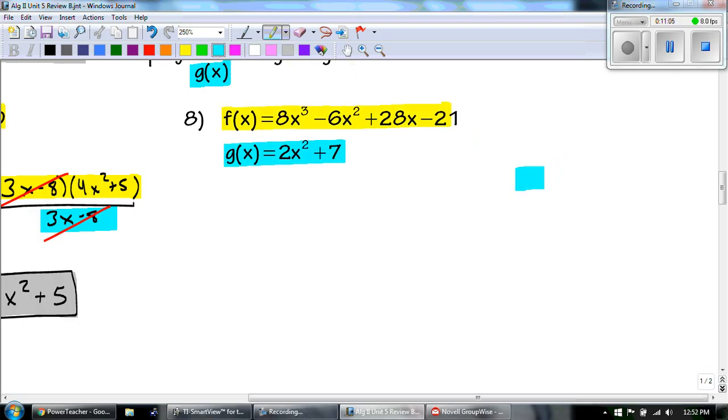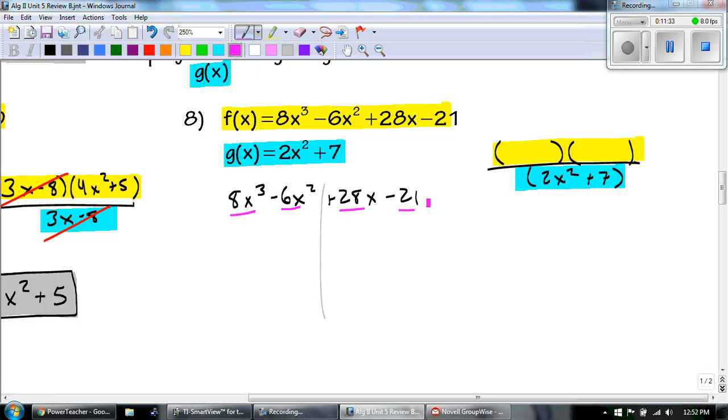And just like we wanted, we want to get these two to match. So we get 3x minus 8 and then 4x squared plus 5. Now, I am not done. That is my side work. They're saying, hey, what is 3x minus 8 times 4x squared plus 5? Because that is all of my f of x. I want to divide that by 3x minus 8.